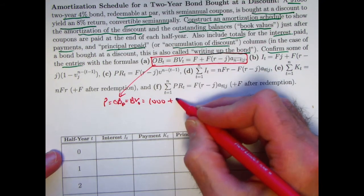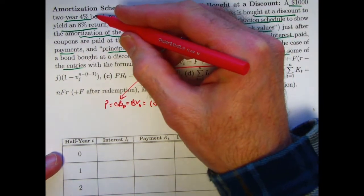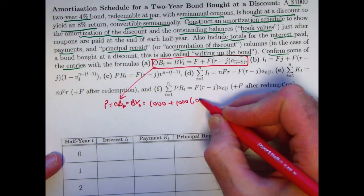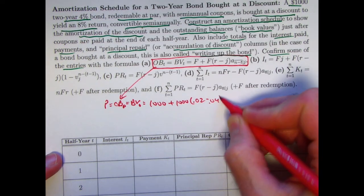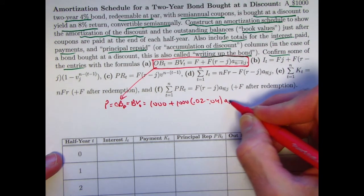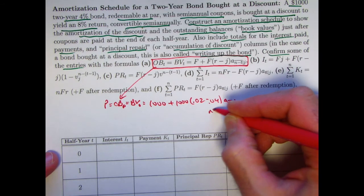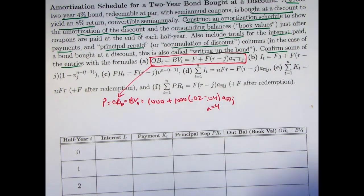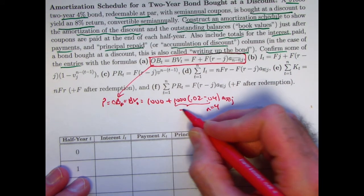That's 1,000 times R minus J. R is 0.02, half of that. J is 0.04, half of the 8%. T here is 0, so this is really ANJ with N equal to 4. It's a two-year bond with semi-annual coupons. Let's go ahead and figure this out. I will just go ahead and write what this is right away. This is going to be negative 20 here.